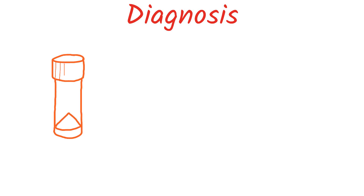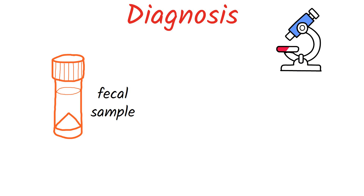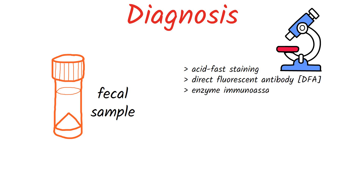The diagnosis of cryptosporidiosis is made by examination of stool samples. The detection of cryptosporidium can be difficult; therefore, doctors may ask patients to submit several stool samples over several days. Most often, stool specimens are examined microscopically using different techniques, for example, acid-fast staining, direct fluorescent antibody, or enzyme immunoassay for detection of cryptosporidium species' antigens.